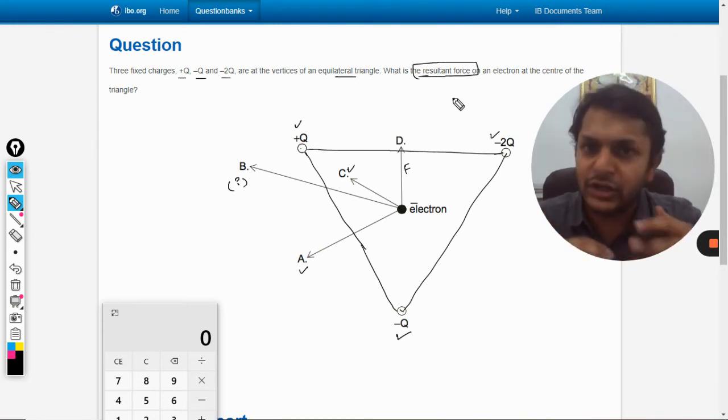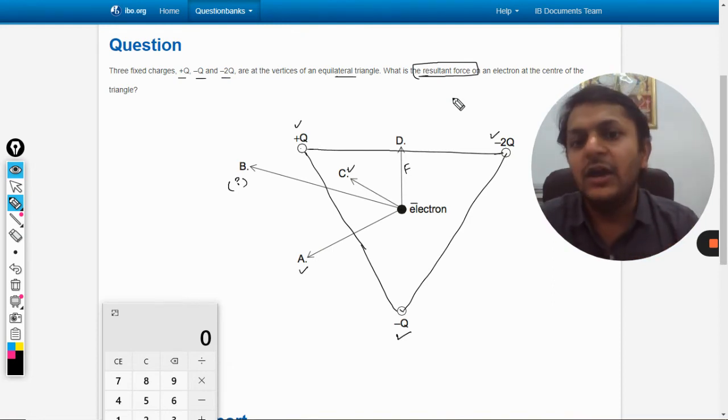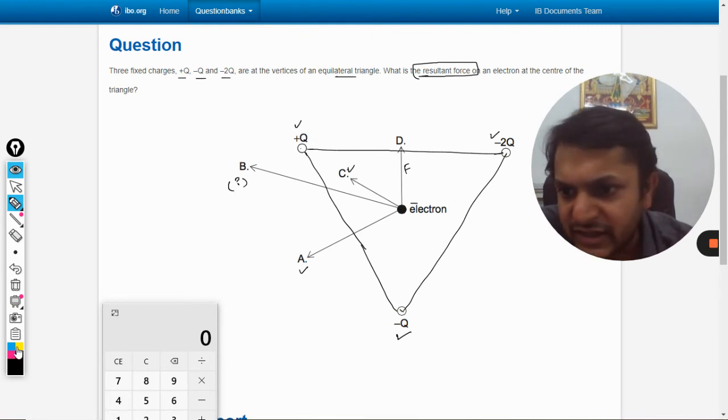Definitely B is going to be our answer because it is not A, it is not C, it is not D. But otherwise also, let us first understand this. C and D, there will be one resultant here.